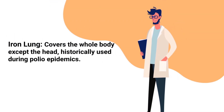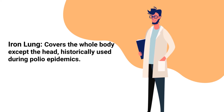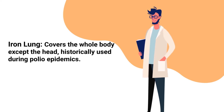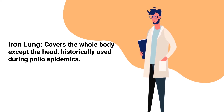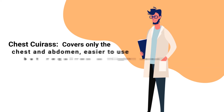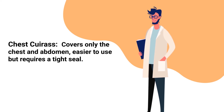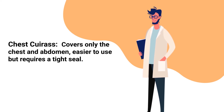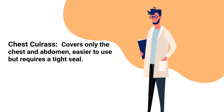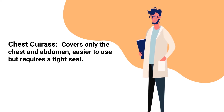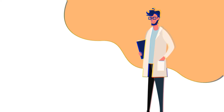Some of the most common types include the iron lung, which covers the whole body except the head and was historically used during the polio epidemics, and the chest cuirass, which covers only the chest and abdomen. The chest cuirass is easier to use but requires a tight seal.